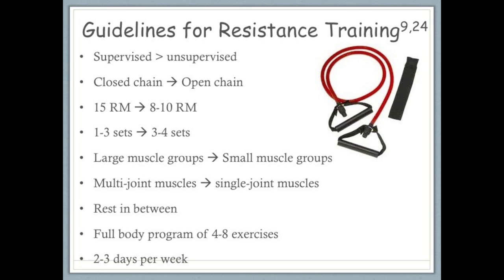Large muscle groups should be strengthened first, progressively moving towards smaller muscle groups. Multi-joint muscles can provide increased stability before progressing to single joint muscle exercises. The general goal is to start with higher repetitions, about 15, and progress to added weight with only 8 to 10 reps. Patients should only start resistance training with 1 to 3 sets and can build up to 3 or 4. There should be 4 to 8 exercises in each training session, ideally focusing on upper extremity, lower extremity, and core muscle groups. These training sessions should be done 2 to 3 times a week with at least 24 hours of recovery in between sessions.